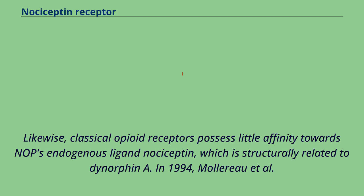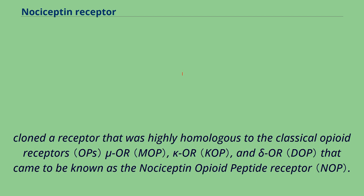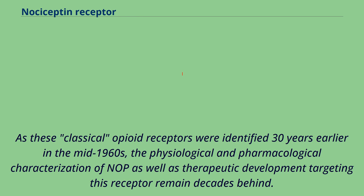In 1994, Malaro et al. cloned a receptor that was highly homologous to the classical opioid receptors mu-OR, kappa-OR, and delta-OR, that came to be known as the nociceptin opioid peptide receptor. As these classical opioid receptors were identified 30 years earlier in the mid-1960s, the physiological and pharmacological characterization of NOP as well as therapeutic development targeting this receptor remain decades behind.